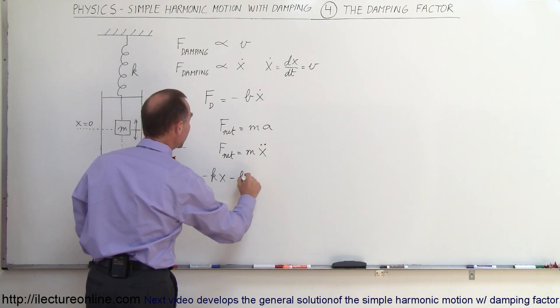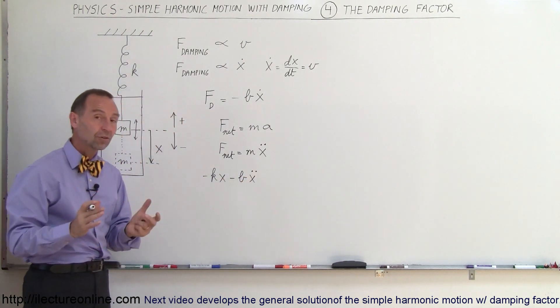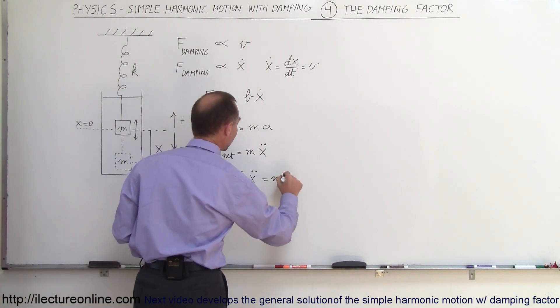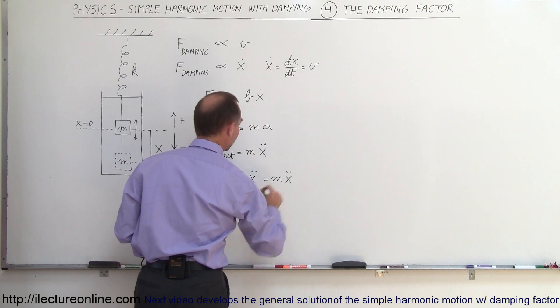Then we also have the damping force, which is going to be minus b x dot. Those two forces together constitute the net force on the object, and that must equal the mass times its acceleration, x double dot.